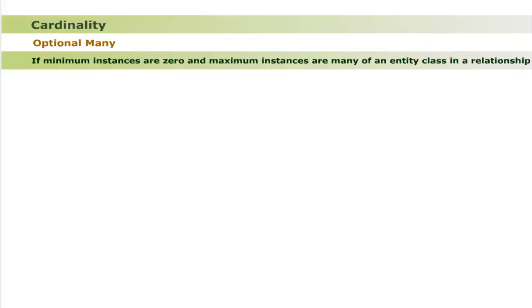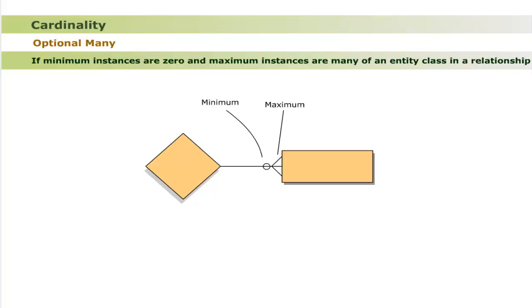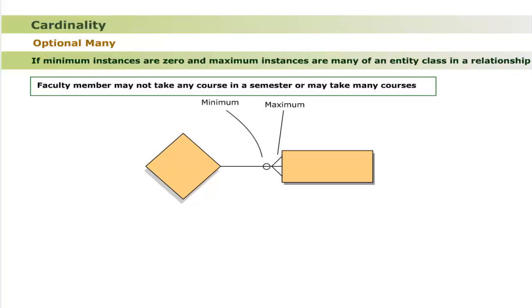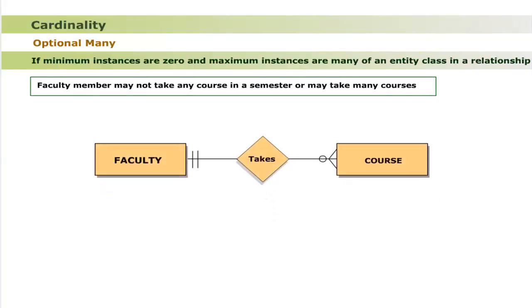Optional many cardinality means minimum instances are zero and maximum instances are many of an entity class in a relationship. For example, a faculty member may not take any course in a semester, or may take many courses. The cardinality of entity class Course is optional many, as the minimum course value is zero and maximum course value is many in the relationship 'take'.